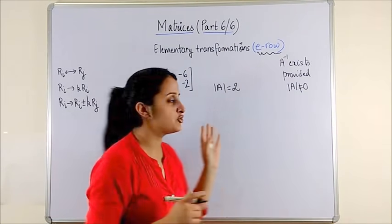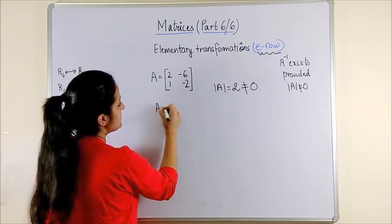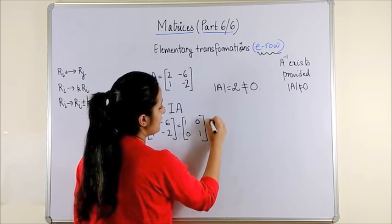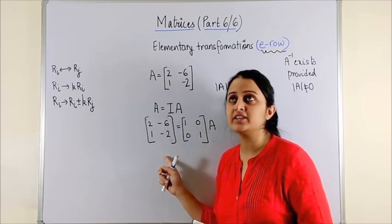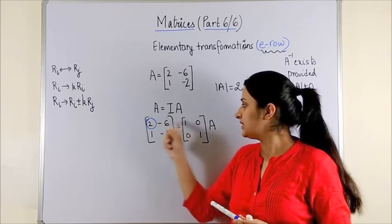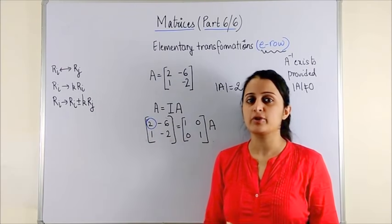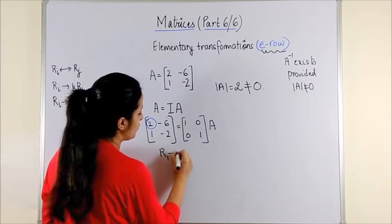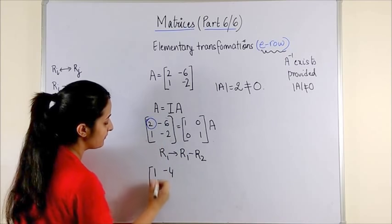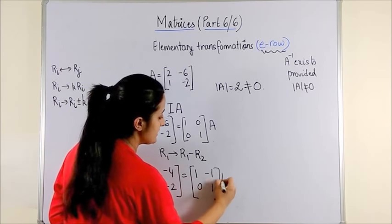For this question, the determinant of A is 2, which is not 0. To begin, the first thing for an elementary row transformation is to express it as I times A — the identity matrix of the same order times A written as it is. Now, to start changing the matrix, the very first element must become 1. We can either multiply by half of row 1 or subtract the two rows to create 1. Let's say row 1 becomes row 1 minus row 2: this gives 1, minus 4; the second row stays as 1 and minus 1, 0, 1, and A stays as it is.